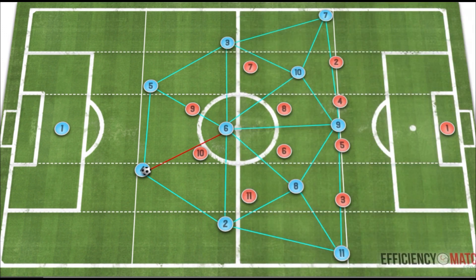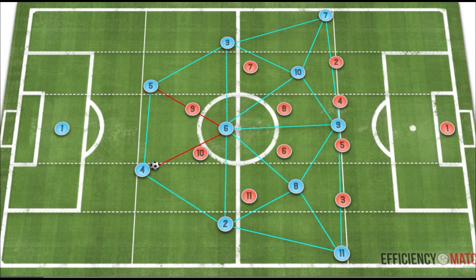If we change the color to red to show that the team out of possession has control over these passing options, we get a more accurate representation of what is actually happening. We can see the inefficiency of this structure — only being able to play horizontally and not into advanced positions via the number six. Wherever the ball is, it's not connected into more advanced positions, and only horizontal circulation can occur.